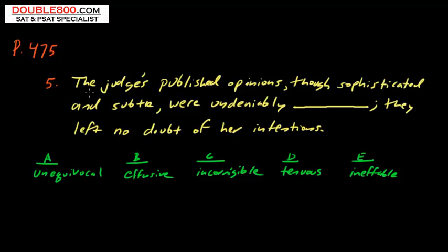Here's the sentence. The judge's published opinions, though sophisticated and subtle, were undeniably blank. They left no doubt of her intentions. So here we've got contrast about the opinions. Though sophisticated and subtle, sort of insignificant, they were undeniably blank, so we want the opposite.